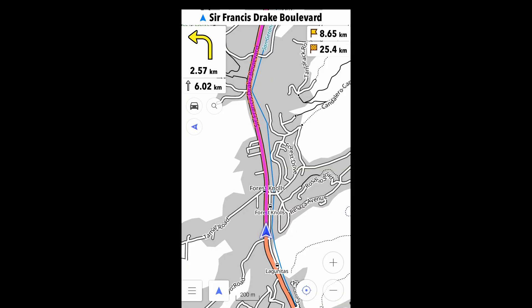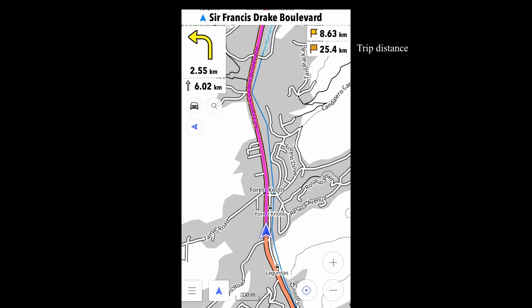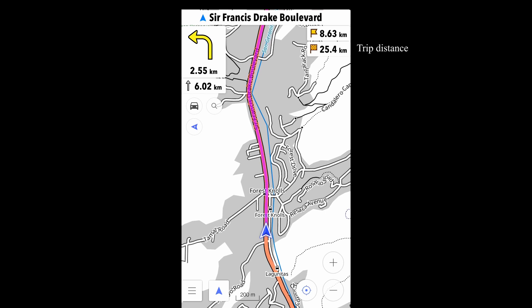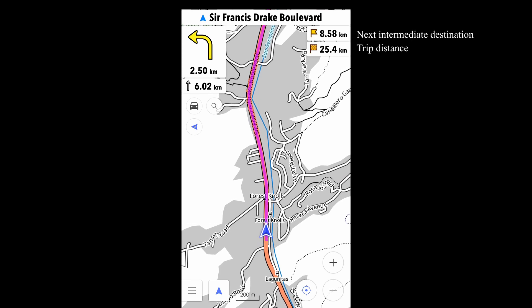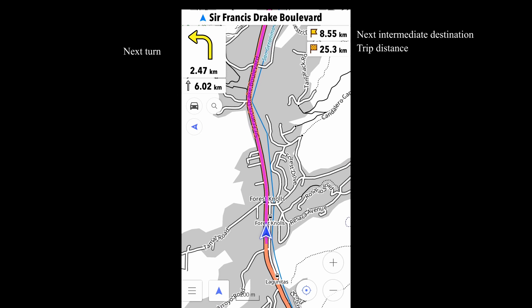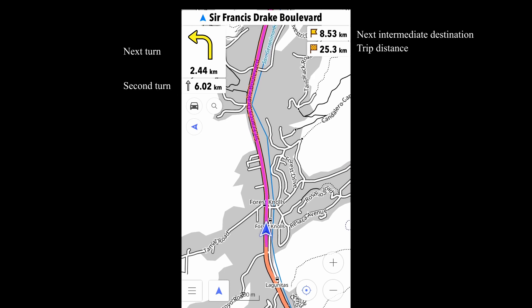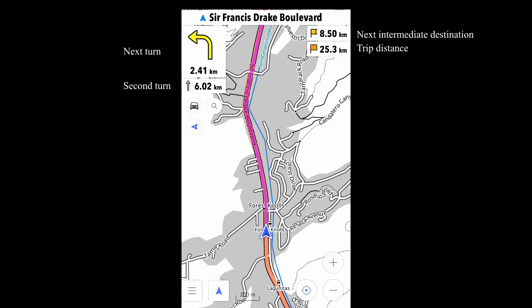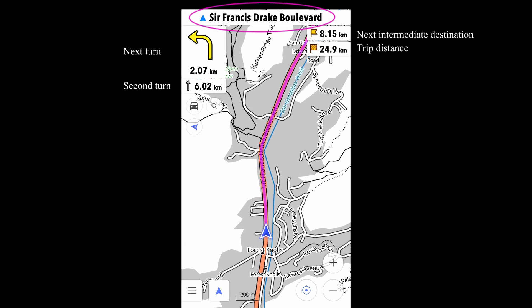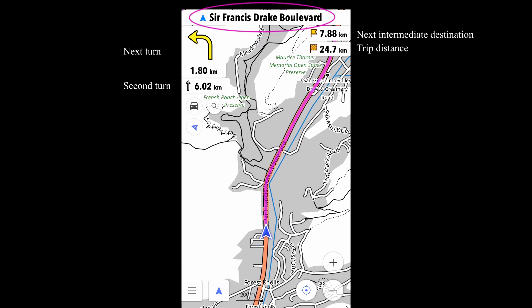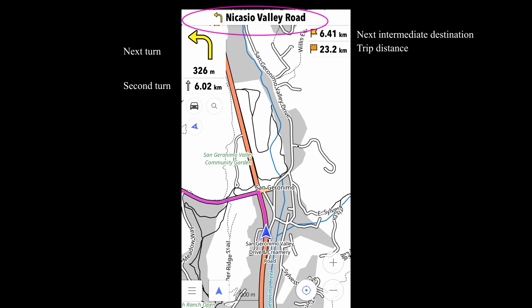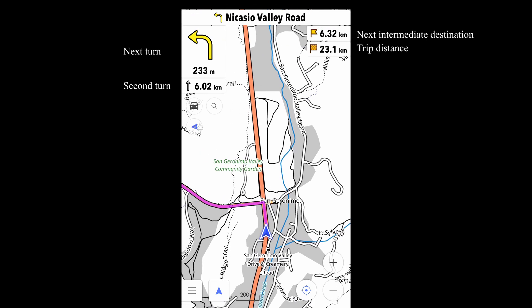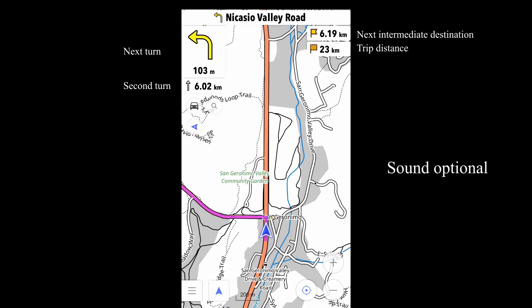Here's what OsmAnd looks like on the road. As I've configured the screen, we're seeing the trip distance and the distance to the first intermediate destination on the right. The distance to the next turn and the turn after that are on the left. The top panel shows the road I'm on, or the road I'll be turning on — for example, turn left onto Nicasio Valley Road.